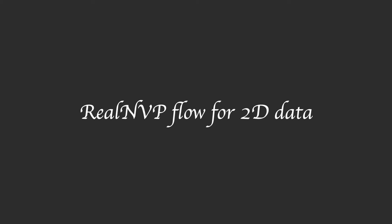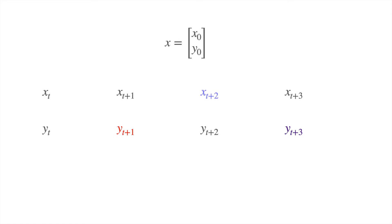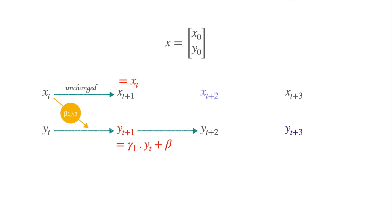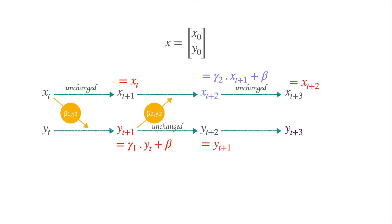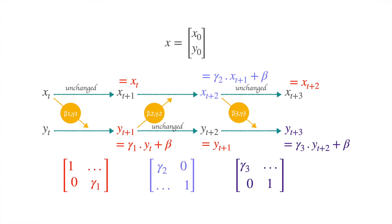Now let's take a look at how we can implement Real NVP for 2D data. Let's say our data is given by (x_t, y_t) at any given time step t. For one time step, we do not change x_t — it remains unchanged — and then we use x_t to calculate beta and gamma, which are used to shift and scale y_t to give y_{t+1}. In the next step, y_{t+1} remains unchanged, and y_{t+1} gives parameters beta_2 and gamma_2, which are used to shift and scale x_{t+1} to give x_{t+2}. In the third step, x_{t+2} is kept constant, and x_{t+2} gives beta_3 and gamma_3, which are used by y_{t+2} to give y_{t+3}.